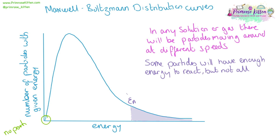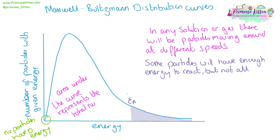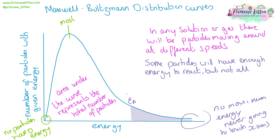There are a few important points to note on a Maxwell distribution curve. No particles are going to have zero energy. The number of particles can be found by working out the area under the graph. There is no maximum value for the amount of energy that a particle can have, so the line will never touch the x-axis. The highest peak of the graph is the most probable energy that a particle can have, and this is lower than the average energy across all the particles in the solution or the gas.